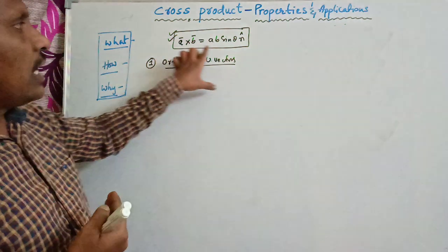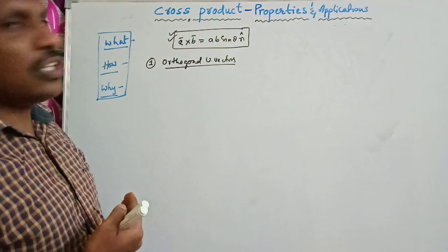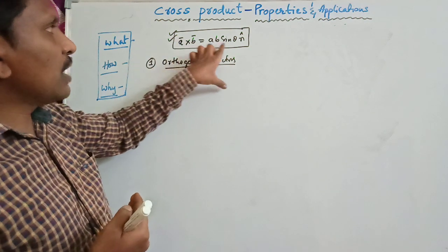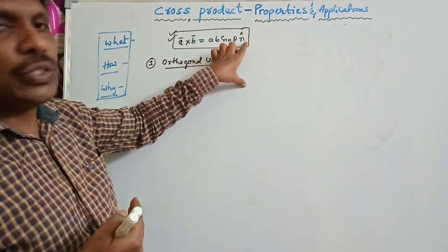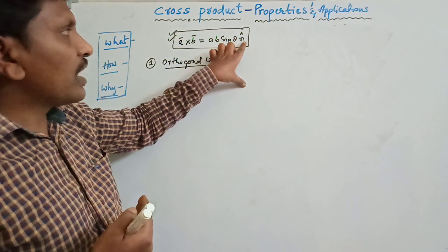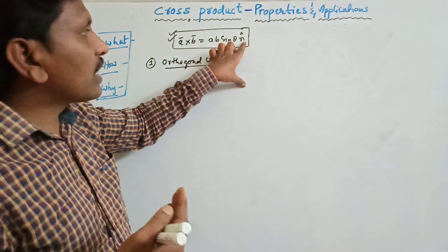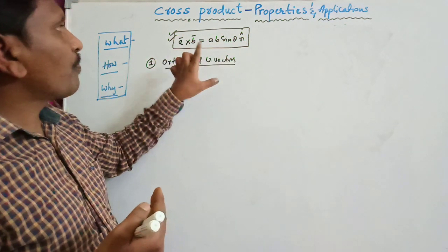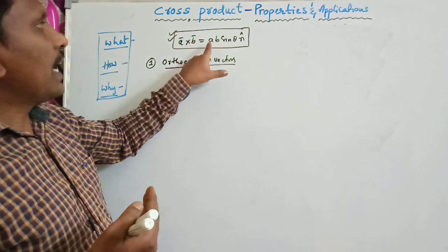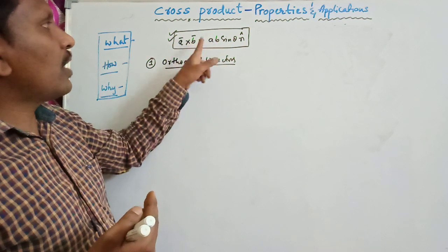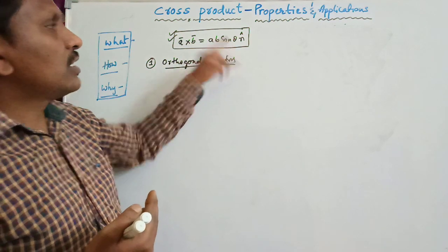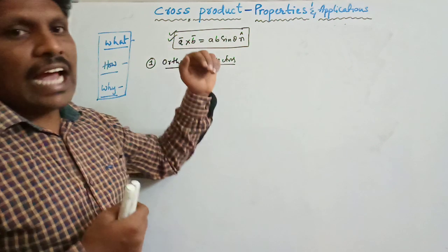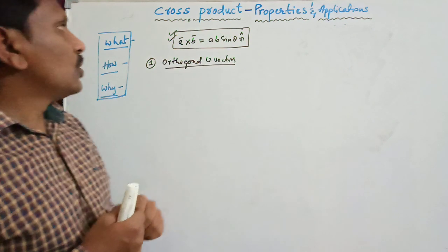We already discussed the definition of the cross product. That is A bar cross B bar equals A·B·sin(θ)·n̂, where n̂ is the unit vector which is normal to A bar and B bar. A·B are the magnitudes of A bar and B bar, and sin(θ) is the function which tells us the angle between the two vectors.